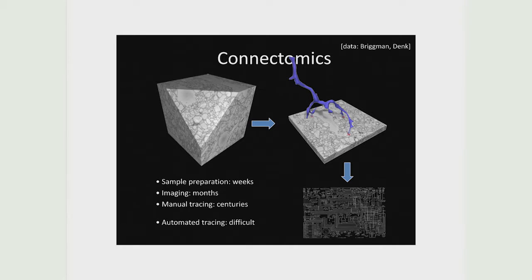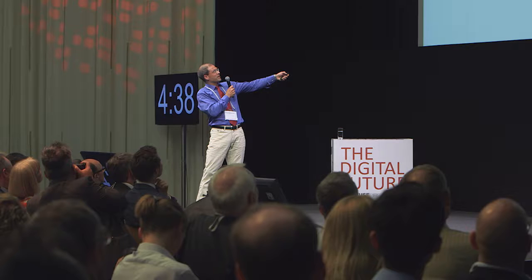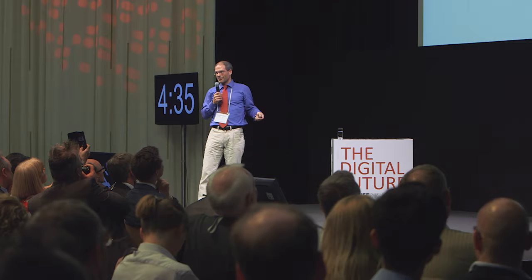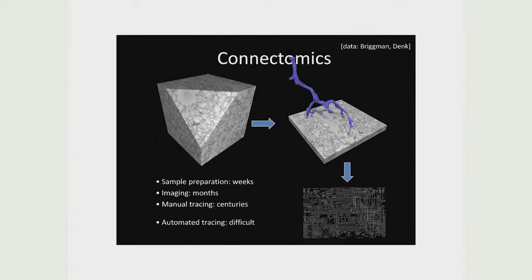We try to go from very high-resolution volume electron microscopic images of the brain, as you see here, to hopefully the complete wiring diagram. We're working on this step — to go from pixels to not just this neurite, but all neurites in the volume, and not just on this tiny volume that you see here, which is a few million pixels, but we try to do that on trillions of pixels.